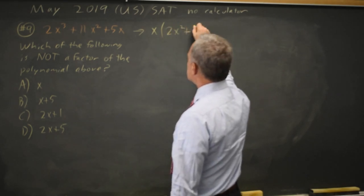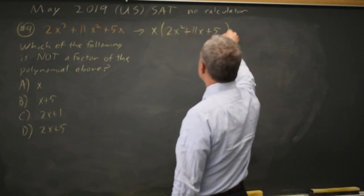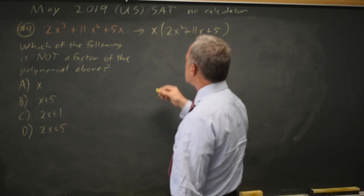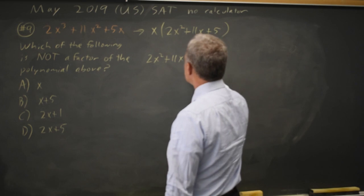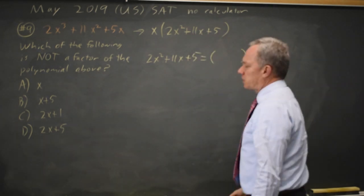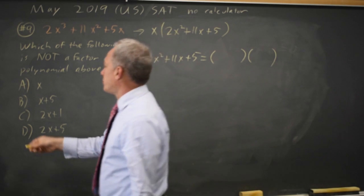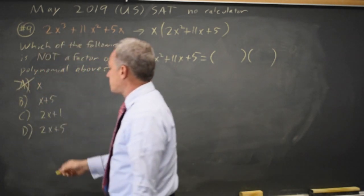2x squared plus 11x plus 5, and now I need to factor the quadratic. 2x squared plus 11x plus 5 equals some product, and it will be two of these three factors, because I already said x is a factor.